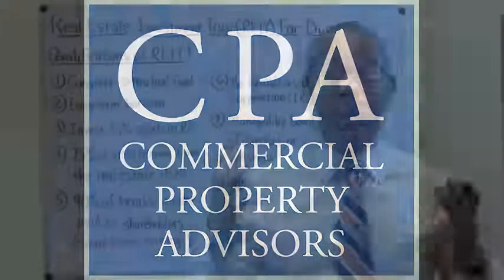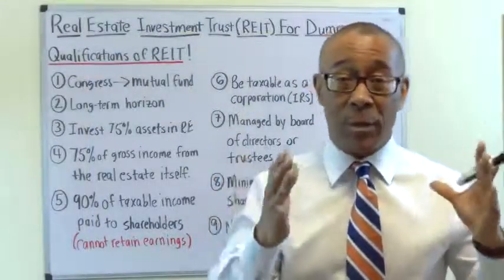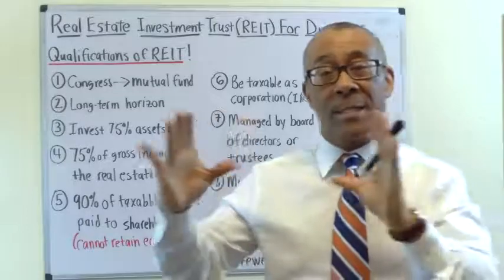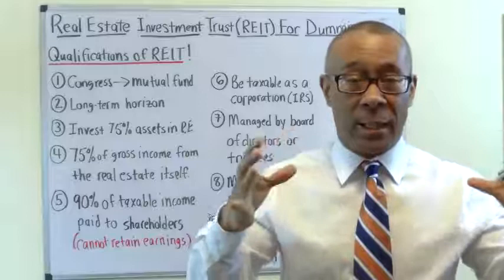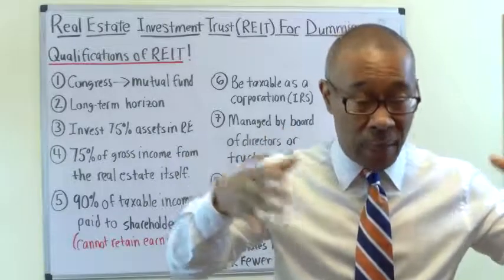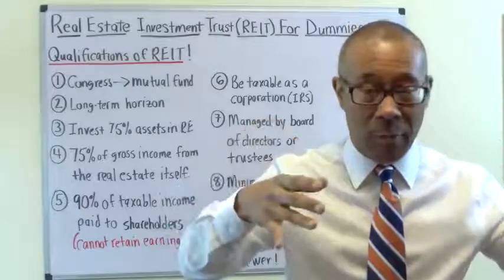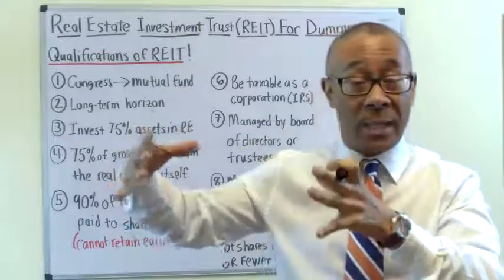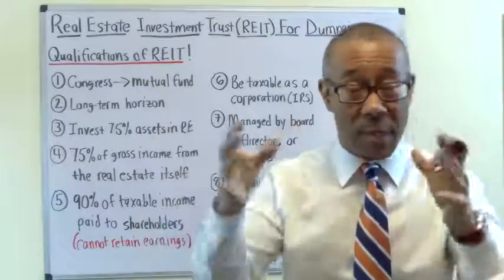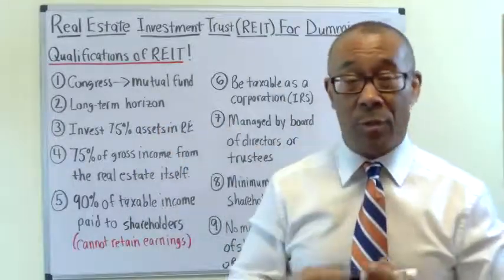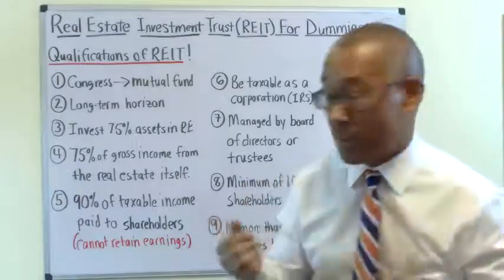There are two basic REITs. The first one is called an equity REIT, and the second one is called a mortgage REIT. An equity REIT actually physically invests in commercial real estate property — they own and operate it. A mortgage REIT invests in loans and makes money off of those loans.